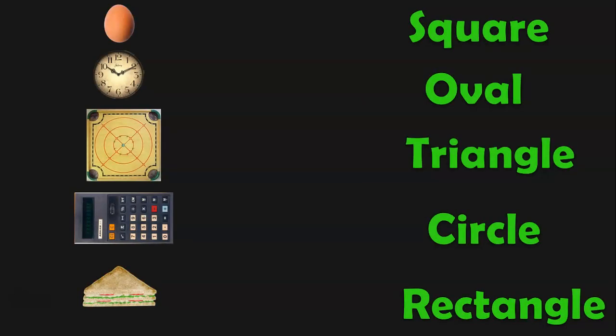Here, I have given on the left side few shapes or objects that resemble few shapes. On the right side, I have given the names of the plane shapes. We will have to match these objects to the shape which they resemble. The first object is an egg. An egg resembles the shape of an oval.